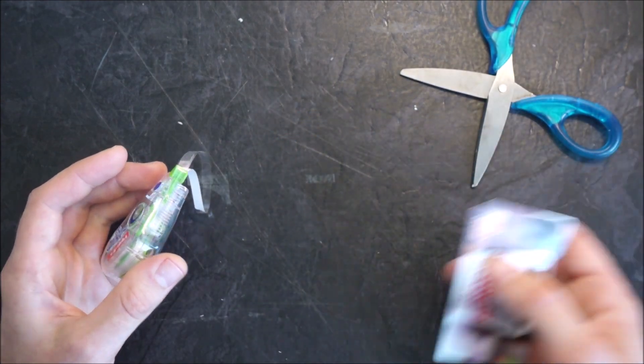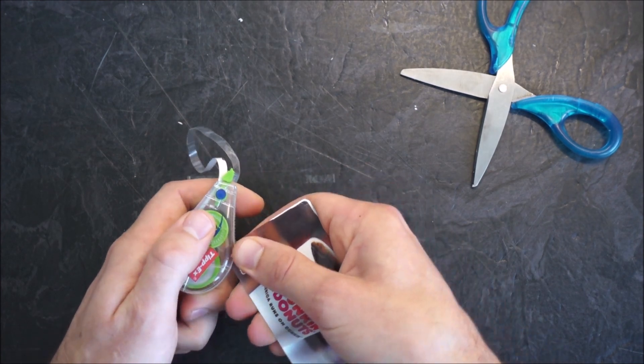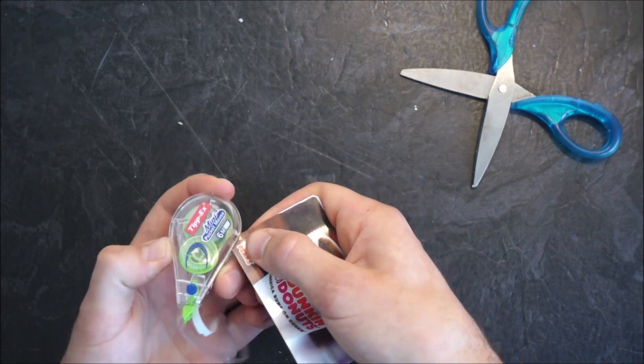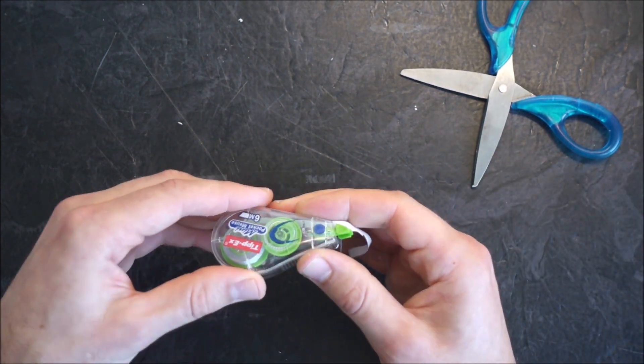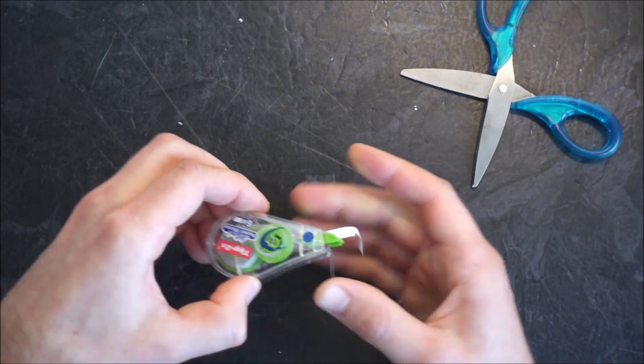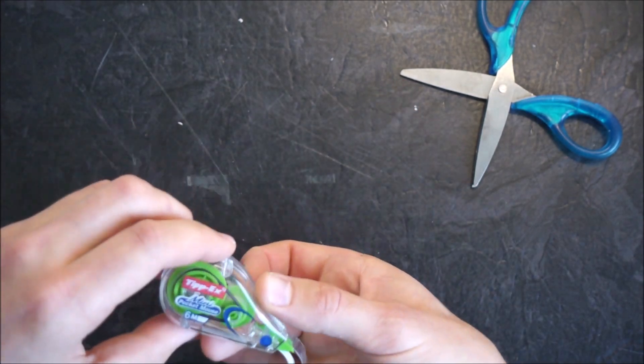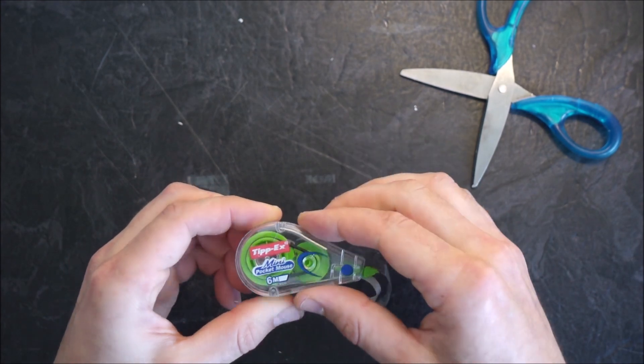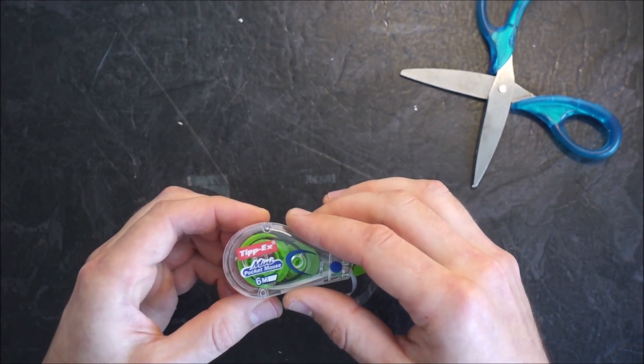Then if you take a gift card or credit card or something like that, you can run it around the edge. That'll help get it open. Before you take it fully apart, I would recommend having the black band facing up on the top side. Then you can open that up.